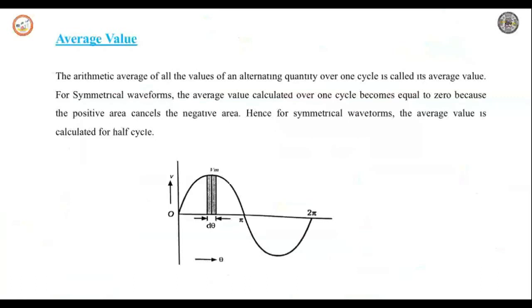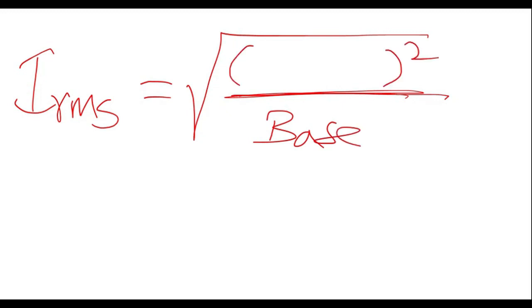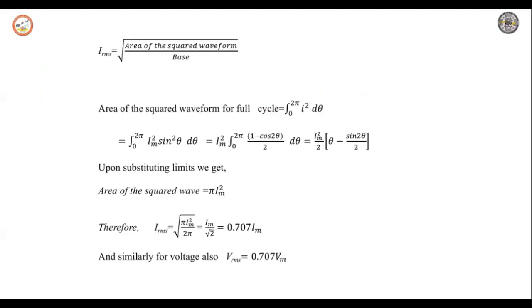Root mean square value — there is a root, mean, and square. You can take the RMS for voltage or for current; both will be derived the same way. Let us do it with the help of current: I_RMS. RMS means it is the square root of the area of the squared waveform divided by the base. So we need to calculate the area of the squared waveform.